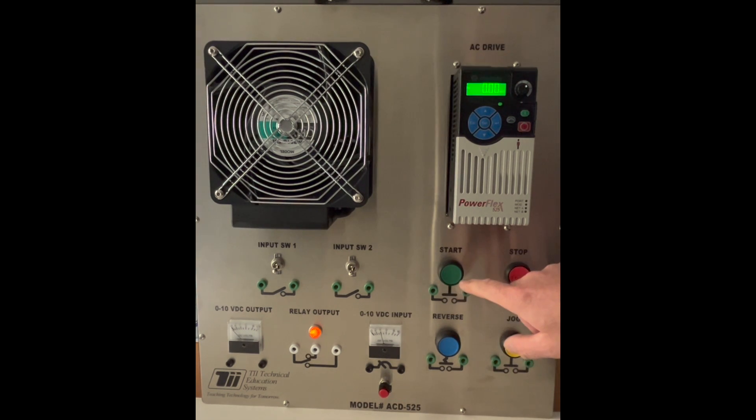Two-wire control allows you to use an external start button so an operator doesn't have to get into the panel where the PowerFlex may reside, but instead having a start button at their operator station or somewhere else that's more convenient.